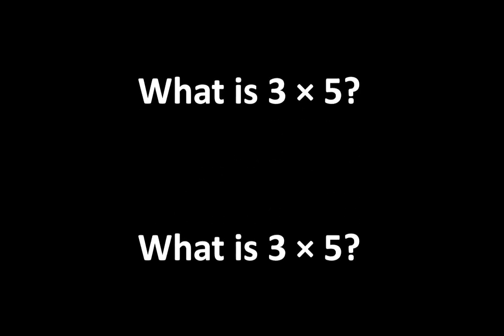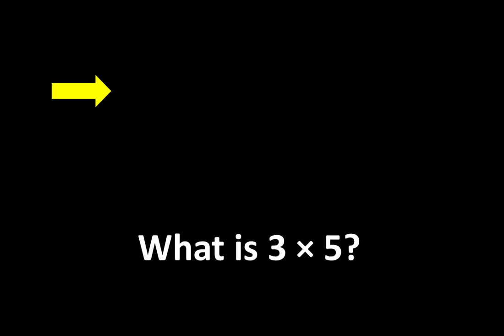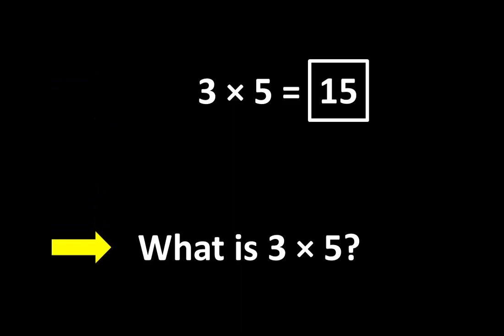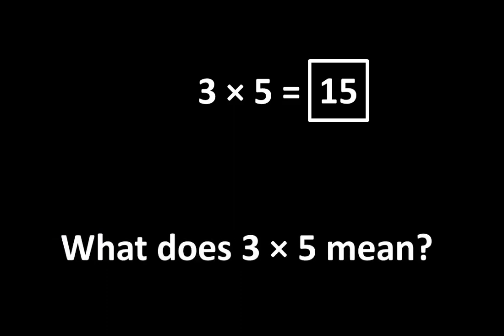What is interesting is that this question can mean several different things. When someone asks, what is 3 times 5, what they might mean is: 3 times 5 is equal to what number? The answer to that question is 15. That is an important idea, but they may also know that there are many other important ideas. So when someone asks, what is 3 times 5, they may be wondering, what does 3 times 5 mean? And that is an important question. In this video, let's take a closer look at both of these ideas.